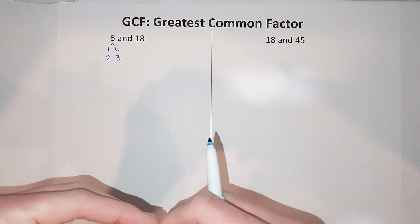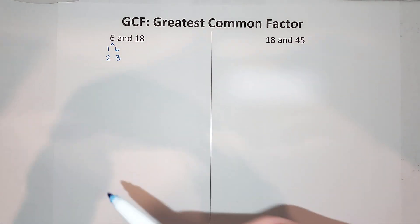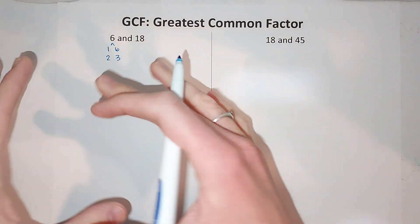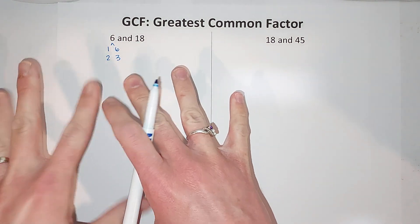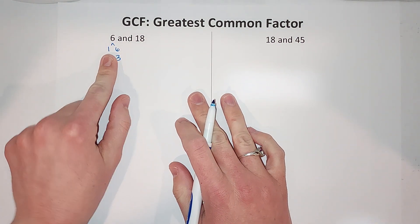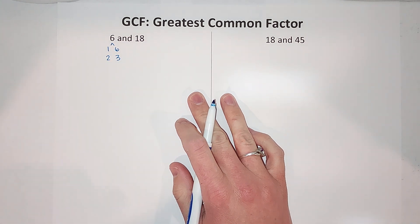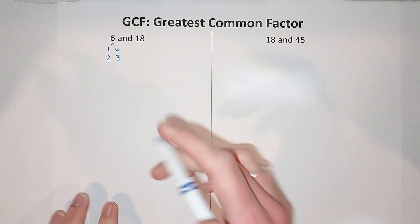The factors of 18 we'll do in just a second. Basically, we're trying to figure out the biggest factor these numbers have in common. All numbers have the common factor of 1, but we want the biggest one, the greatest one.